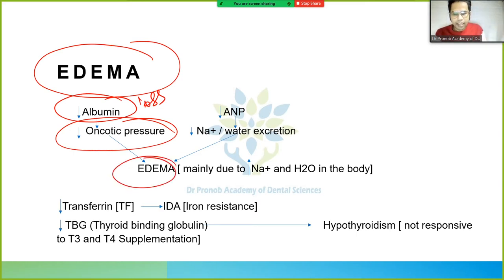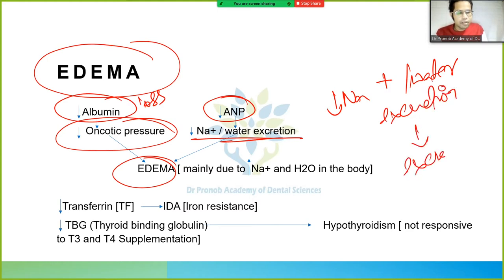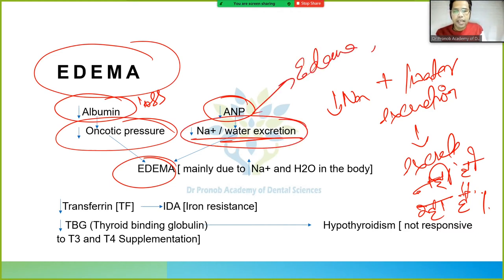Atrial natriuretic peptide (ANP) — when it decreases, there is reduced sodium and water excretion. If sodium and water are not excreted, they accumulate in the body, causing edema. Previously it was thought that oncotic pressure and albumin loss cause edema, but now it is understood that edema is mainly due to increased sodium and water retention in the body.